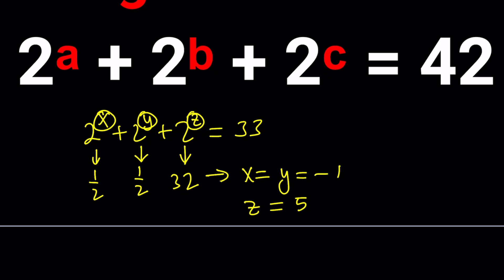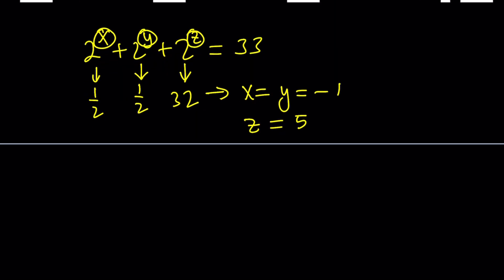So this combination would work, and of course, x, y, z can switch around. Notice the symmetry. Or there's another scenario that works. Think about it. Did you find it? Pause the video if you don't want to see the answer. But it could also be 16 + 16 + 1, because 16 and 1 are both powers of 2.